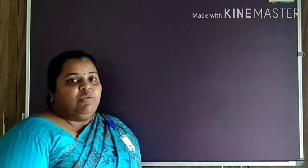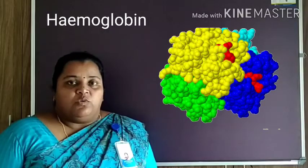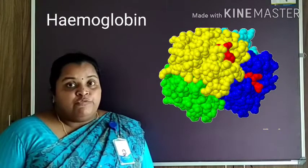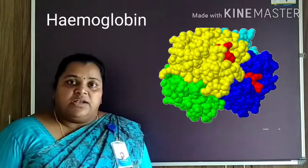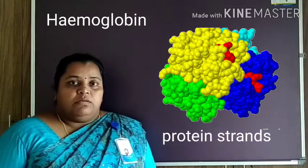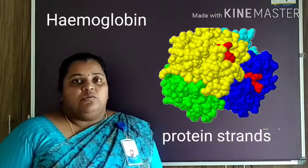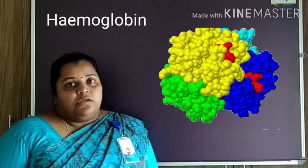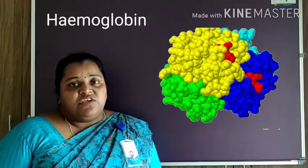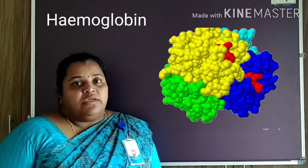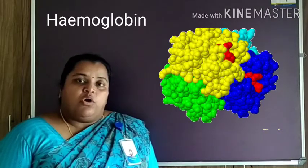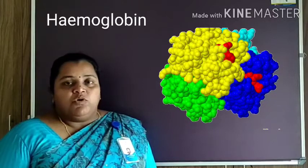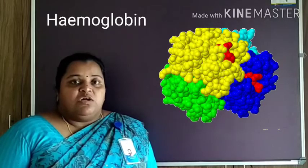Now let us see the structure of hemoglobin. The structure of hemoglobin consists of four protein strands with iron-containing heme. Oxygen molecules combine with iron in the heme. Each hemoglobin molecule can carry four oxygen molecules, since hemoglobin has four protein strands and a heme.